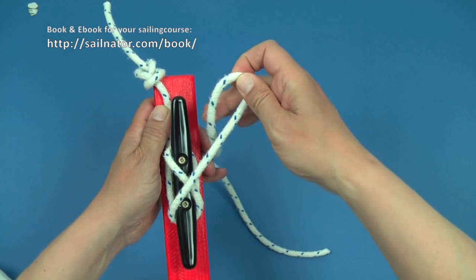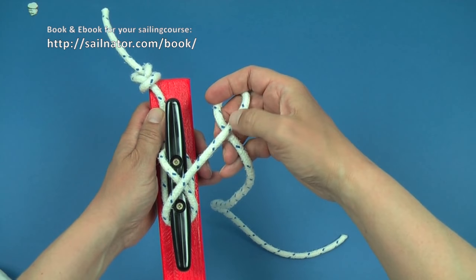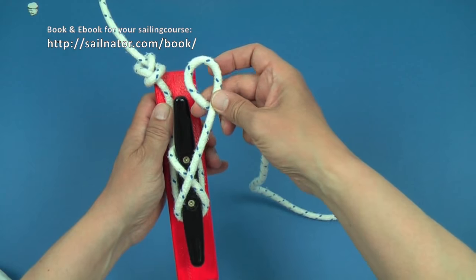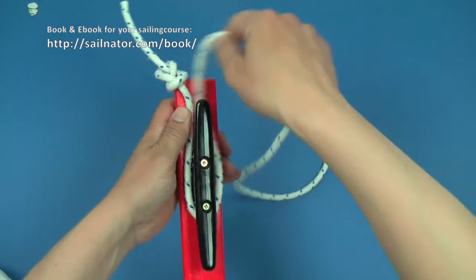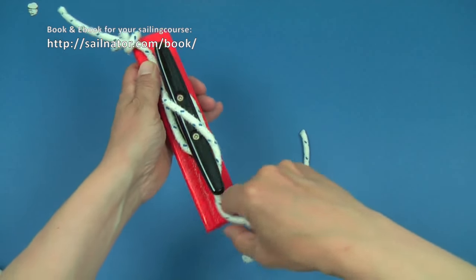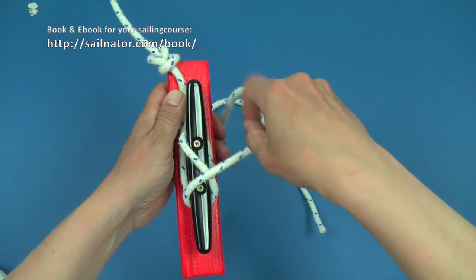A loop where the loose part is under the moored part. I put the bitter over the cleat. O, X, X, bitter.